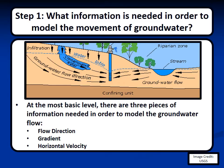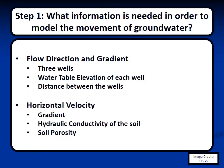Now that you know the basic premise for how groundwater flows, the next step is to know the information needed to model groundwater flow. At the most basic level, three pieces of information are needed: flow direction, gradient, and horizontal velocity. Since we can't see groundwater as we would a river or stream, we use wells to determine these values. To do this, we need information from at least three wells — the water table elevation at each well, the distance between each well, and the hydraulic conductivity and porosity of the soil at each well.